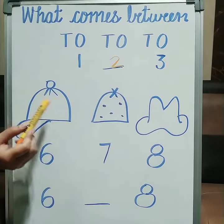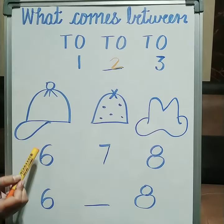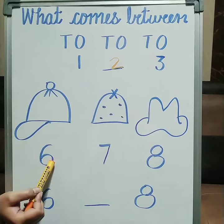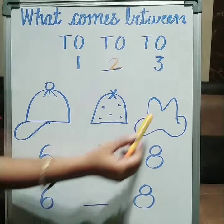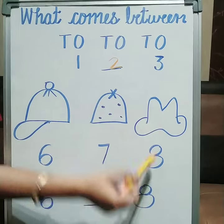As you can see in the picture, first one is cap. Cap number is six. Second one is bun. Bun number is seven. Third one is hat. Hat number is eight.